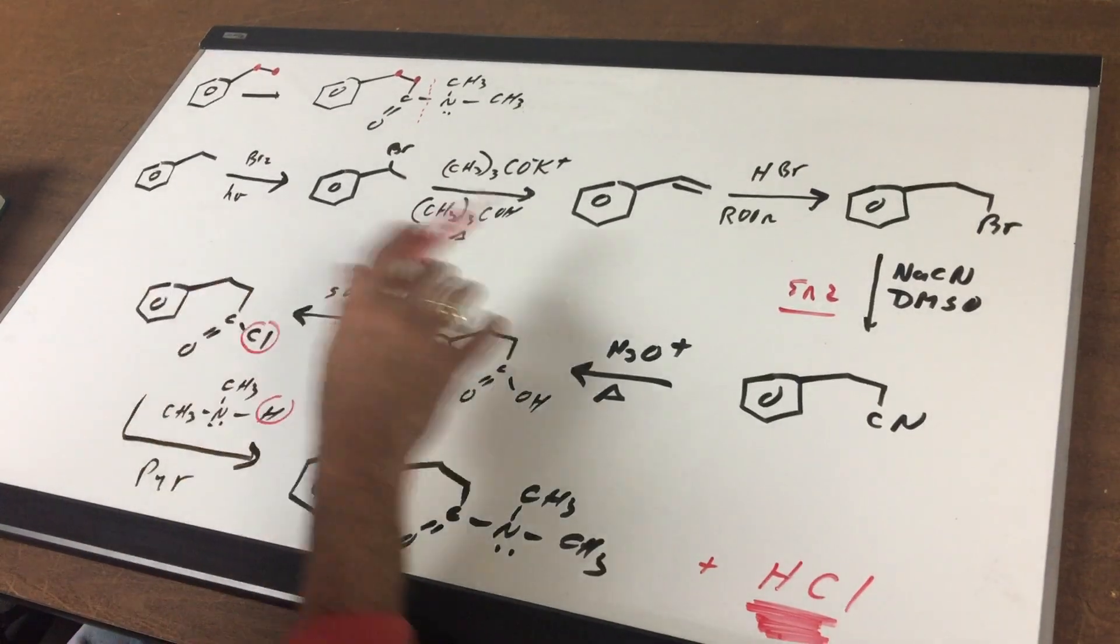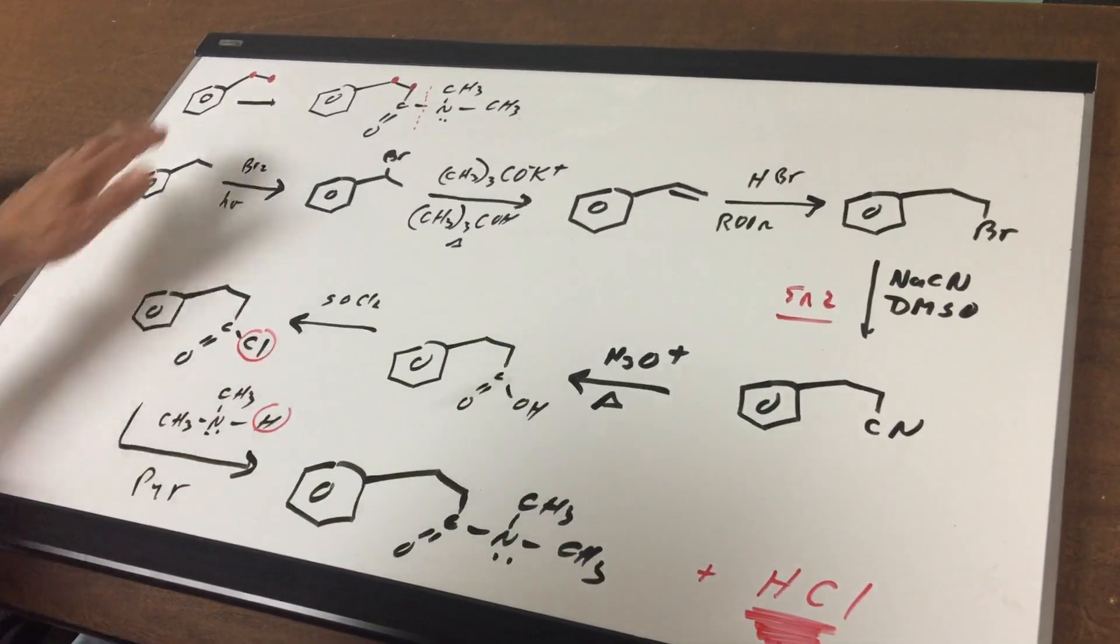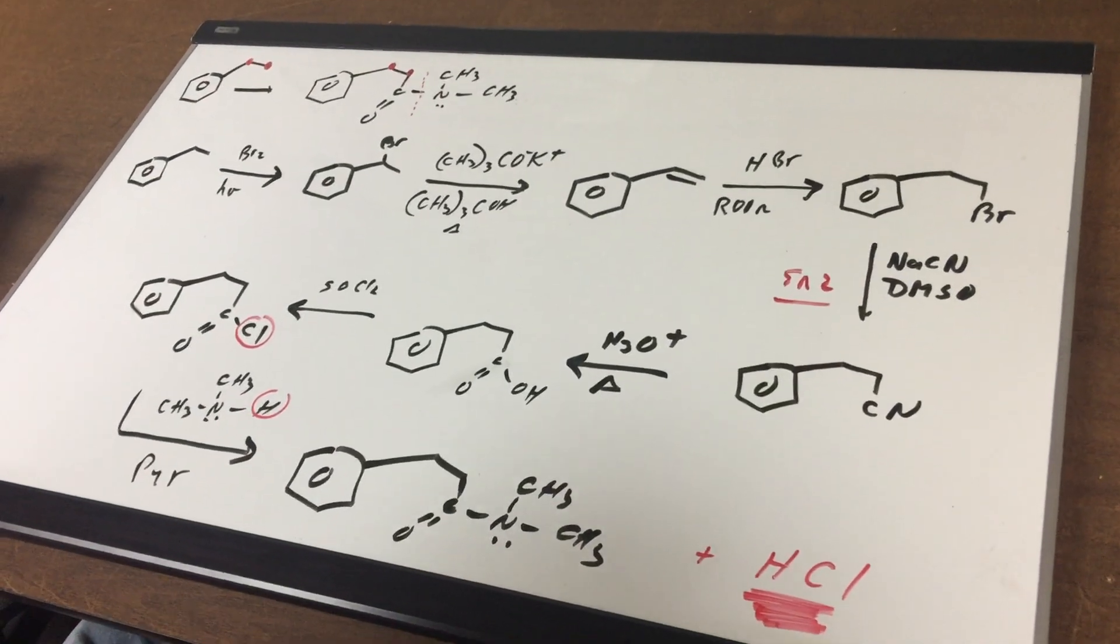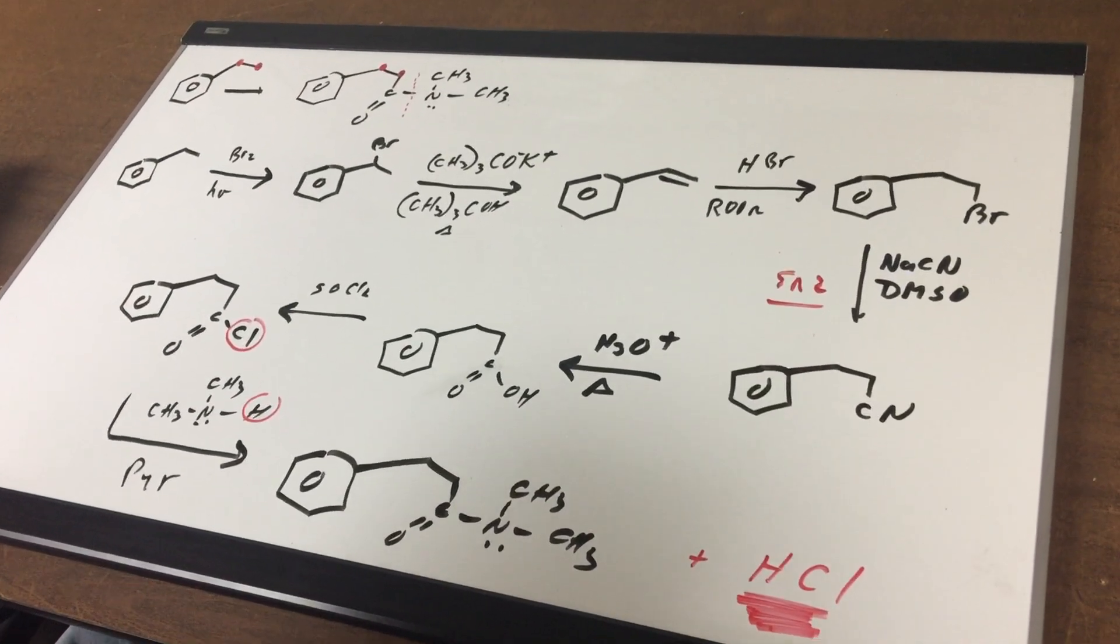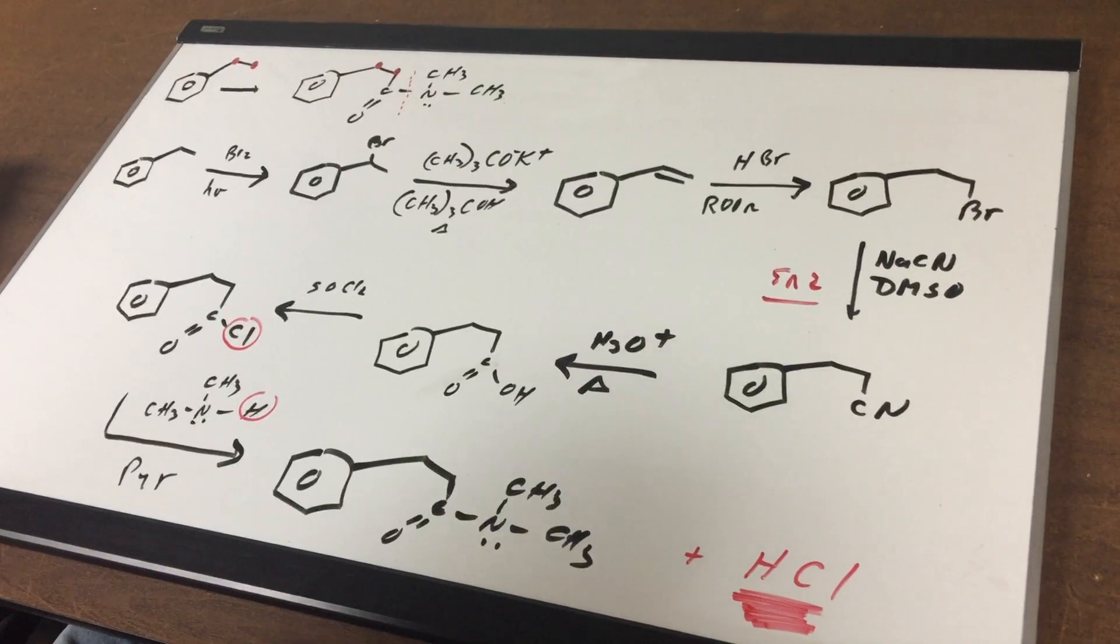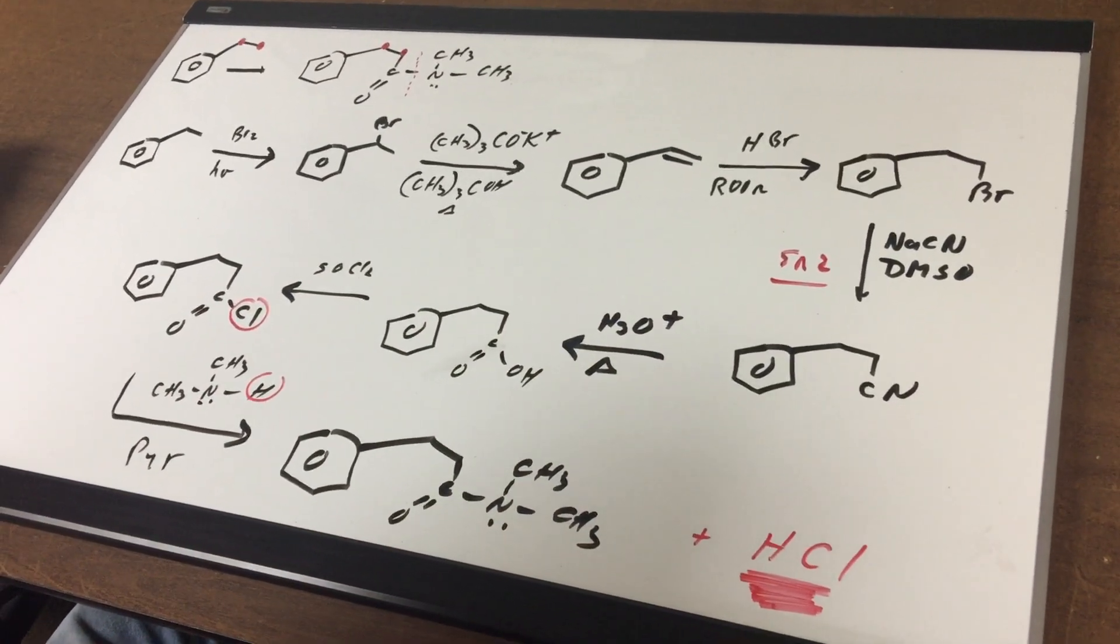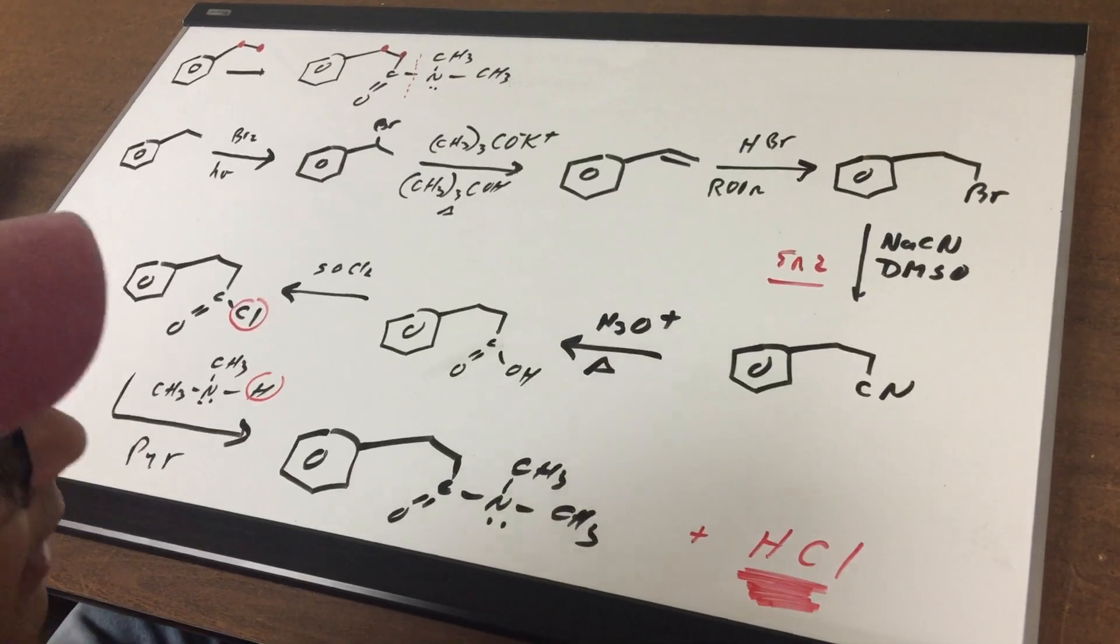There you have it. So, you had several steps on your way to going from ethyl benzene into this amide. All right, I hope this clears things up and how to go about doing some synthesis. Every one of these reactions could land on the DAT and make sure you understand each step. All right, good day to you.